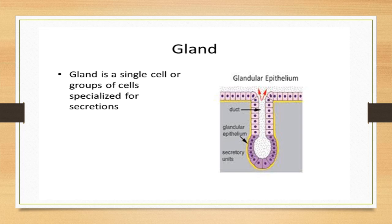A gland is a single cell or a group of cells specialized for secretion. The gland has a secretory unit which is lined with the glandular epithelium, and it also has a supporting unit which is the stroma of the gland. Whenever we describe a gland we describe it in two terms: the parenchyma, which is the functional or secretory unit, and the stroma, which is the connective tissue or supporting portion.